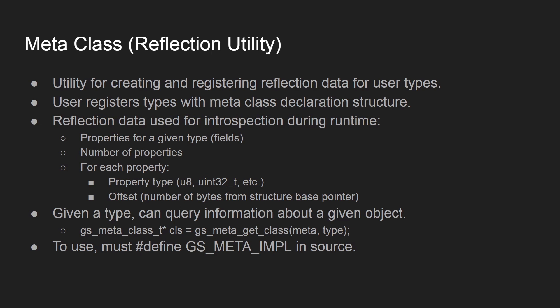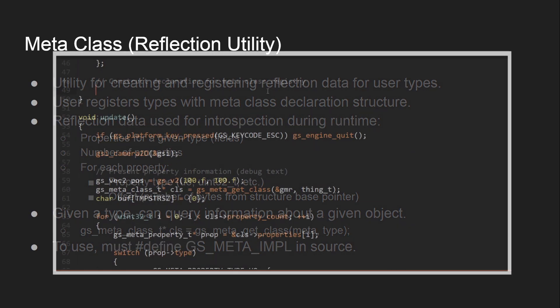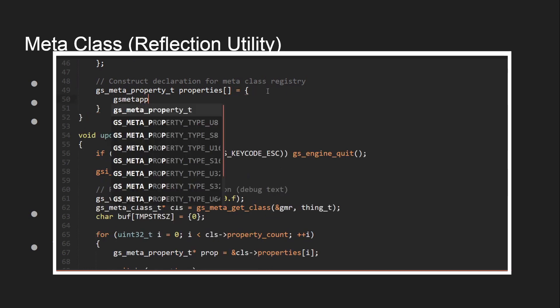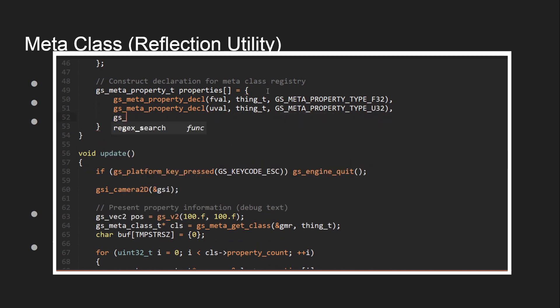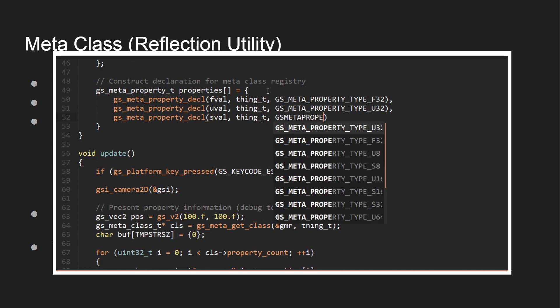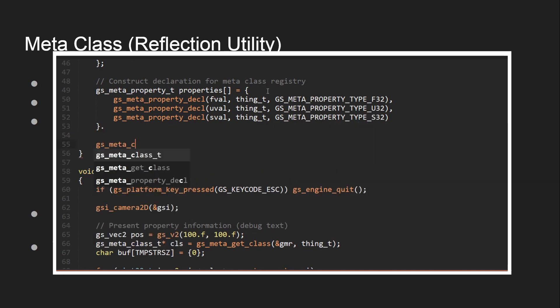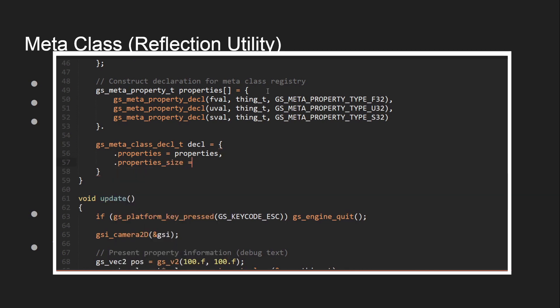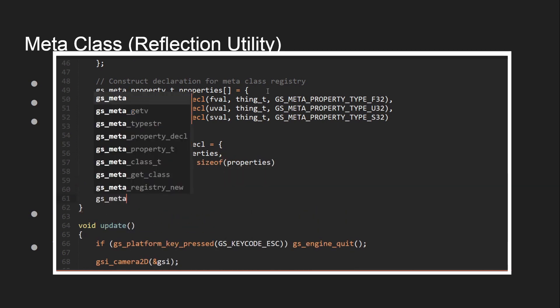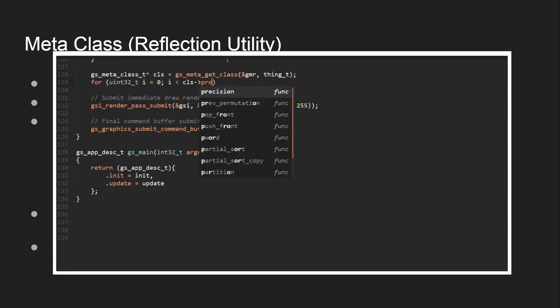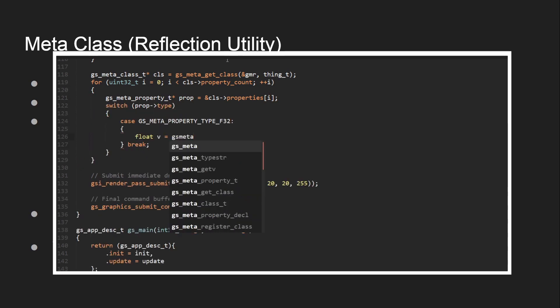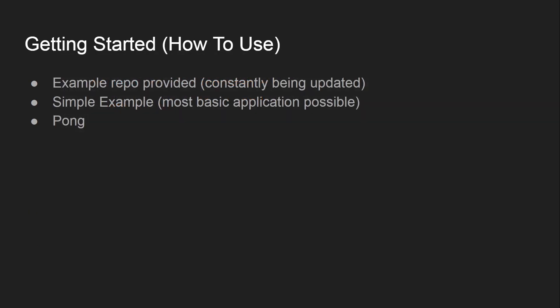The final currently available utility is the metaclass utility, used for creating and registering reflection data for any given user type. The user registers new types with the metaclass declaration structure. The reflection data is used for introspection at runtime — various properties for a given type include the fields, the number of properties, and for each property: the property type (whether it's a uint8, uint32, f32, etc.) and the offset in bytes from the structure base pointer. Given a particular type, you can query information about a given object.